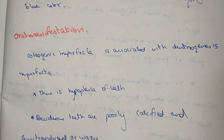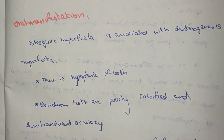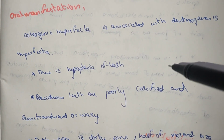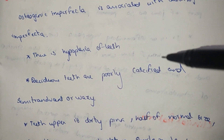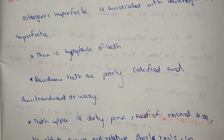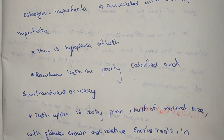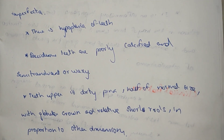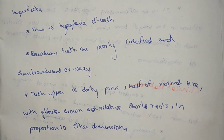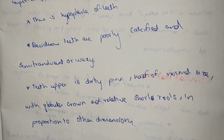Osteogenesis imperfecta and dentinogenesis imperfecta are associated. Dentinogenesis imperfecta affects teeth formation, causing hypoplasia with color spots. The deciduous teeth are poorly calcified, semi-translucent, and waxy. Teeth appear dirty pink in color, are half the normal size, with globular crowns and relatively short roots in proportion to other dimensions.